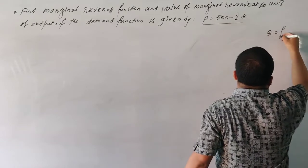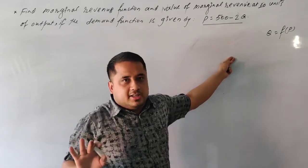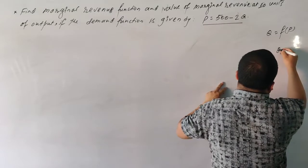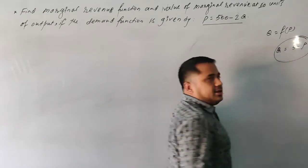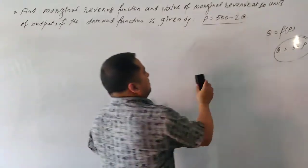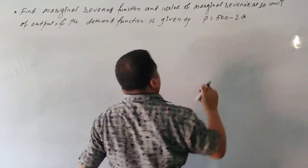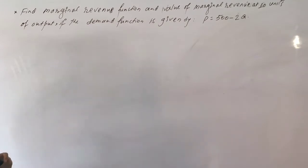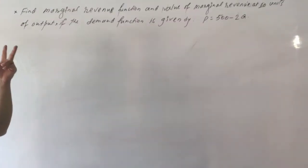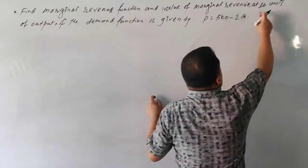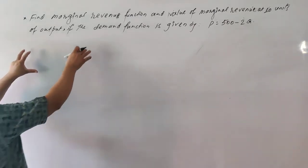Another example: the demand function is given as Q equals 5 minus P. We need to find the marginal revenue function and the value of marginal revenue at the given output level.